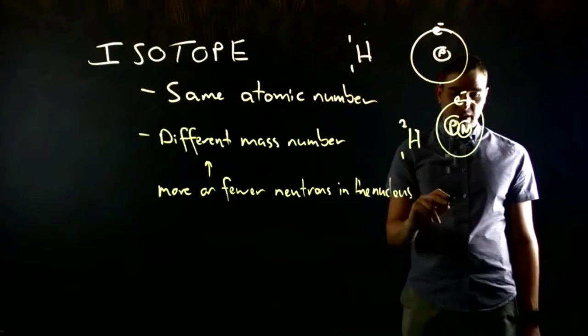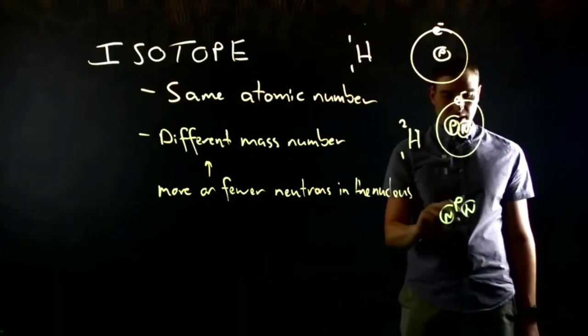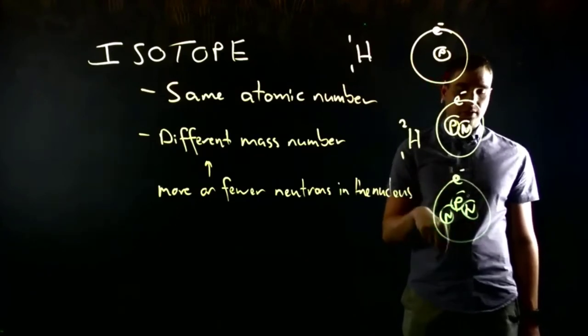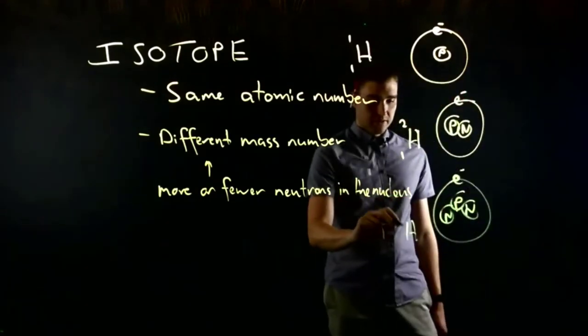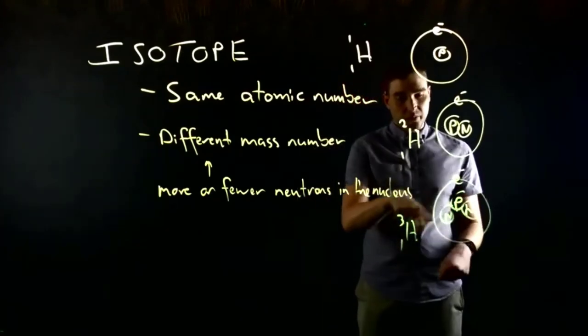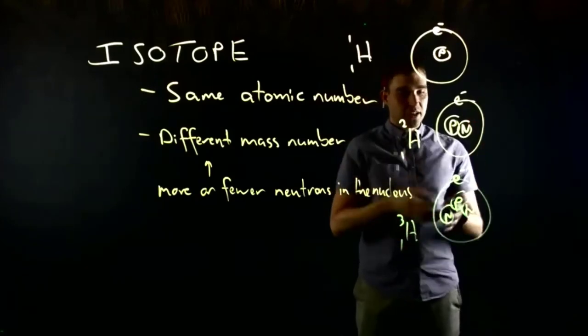And then we could have hydrogen-3. It's got a proton and two neutrons joined together, and again, still one electron at the top. So this is hydrogen-3. Two neutrons, one proton, total mass of three because we've got three things in the middle, and that's our three types of hydrogen.